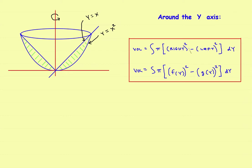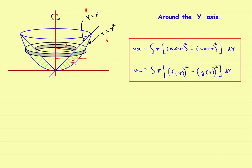Sometimes it helps to take a look at a single washer just to see what this looks like. You've got an inner radius and an outer radius. The function on the right would be the f function, and the function on the left would be g. Or if you prefer, you can call it the inside radius — so the inside radius from here to here would be g, and the outside radius from here to here would be f. So either the right one squared minus the left one squared, or the outside squared minus the inside squared.